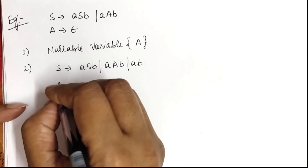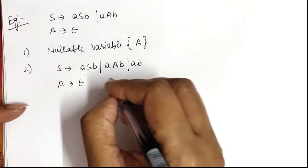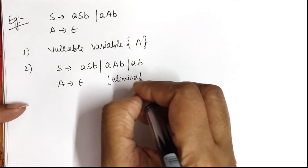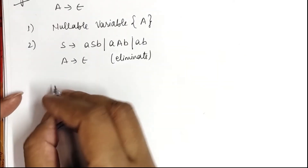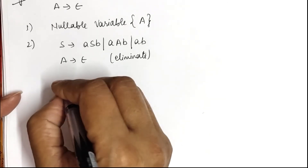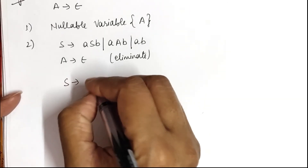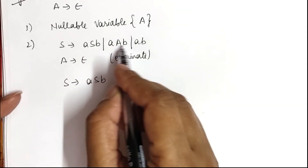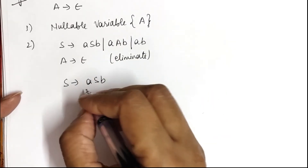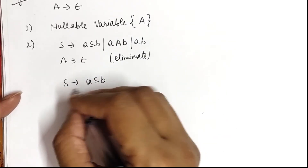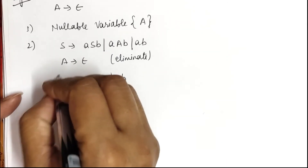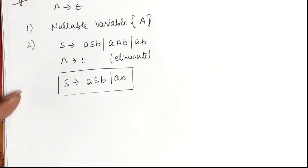A can be epsilon, so we now eliminate it. The final reduced grammar is: S derives A A S B or A B. This is the final answer.